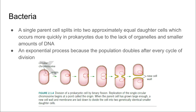If we look at bacteria in particular, we see that they do reproduce asexually as the single parent cell splits into two approximately equal daughter cells. This occurs more quickly in prokaryotes due to the fact that they lack organelles and have a smaller amount of DNA in comparison to eukaryotes. This allows bacteria to reproduce exponentially as the population doubles after every cycle of cell division.